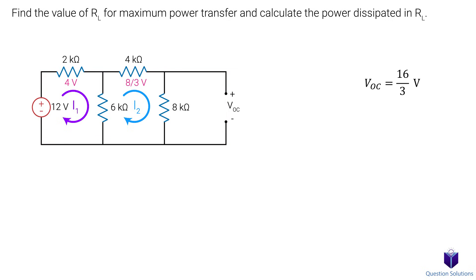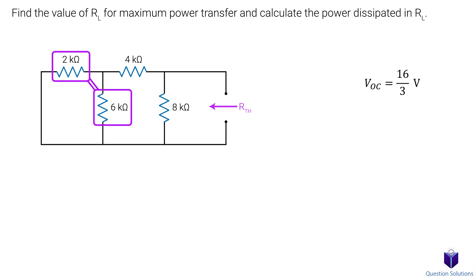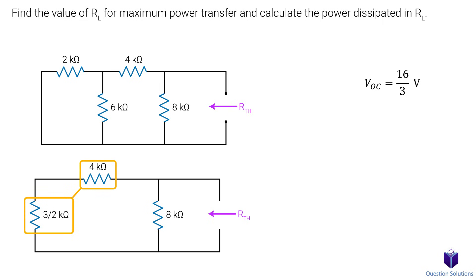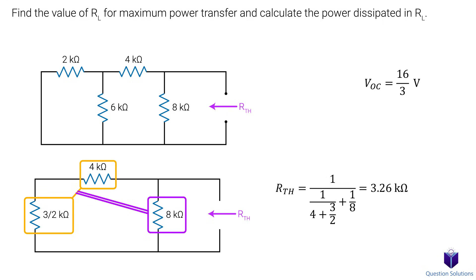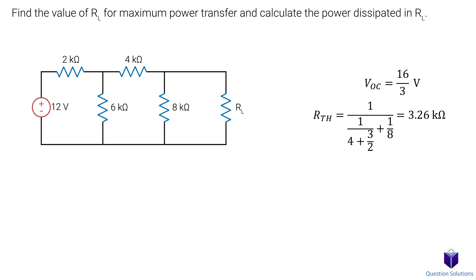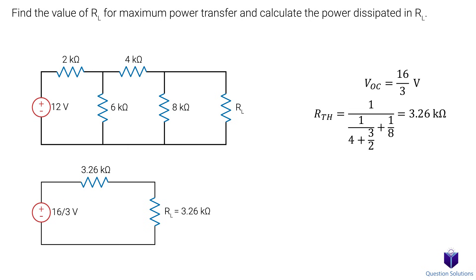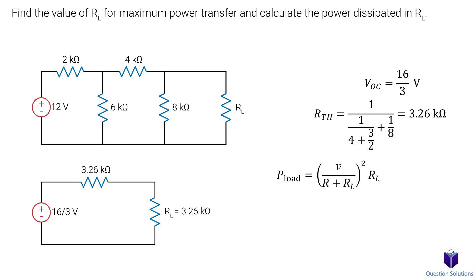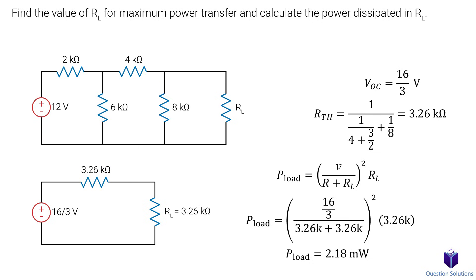Now that we have the VOC, let's figure out the equivalent resistance. Voltage sources turn into short circuits. Then we look into the circuit to figure out the total resistance. These two resistors are parallel to each other, so we can combine them. Drawing another circuit to see this better, we see these two resistors are in series, and that combination is parallel to the third resistor. We get a total equivalent resistance of 3.26k ohms. Now we can draw our Thevenin equivalent circuit. From the RTH, we instantly know that RL should also be 3.26k ohms for maximum power transfer. Plugging in our values gives us 2.18 mW, which is the maximum power transfer.